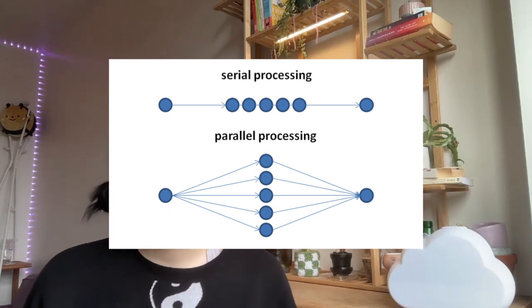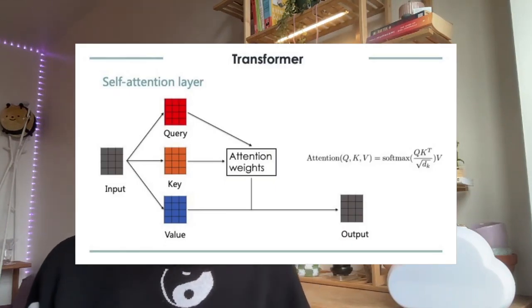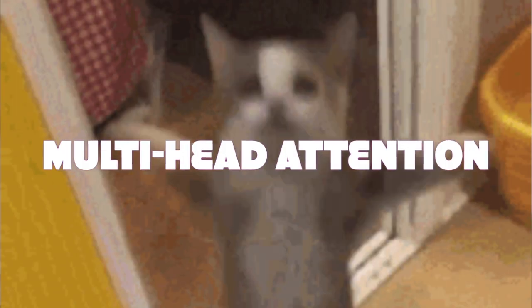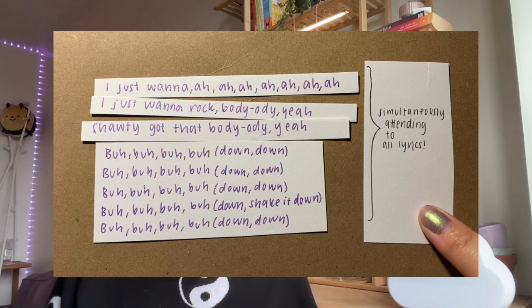Additionally, RNNs were unable to fully take advantage of parallel computing as they needed to process the sequence one time step at a time. The transformer architecture addressed these limitations by introducing the concept of self-attention. Self-attention allows the model to selectively focus on different parts of the input rather than processing the entire sentence sequentially. This is done by computing a set of attention weights which indicate the importance of each part of the input when predicting the next word. The transformer also introduced multi-head attention, which allows the model to attend to multiple different parts of the input simultaneously, learning different types of relationships between inputs and leading to a more robust understanding of language.